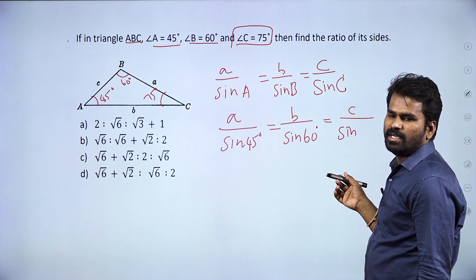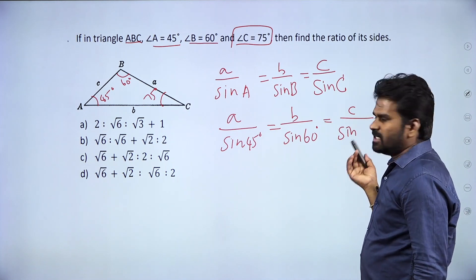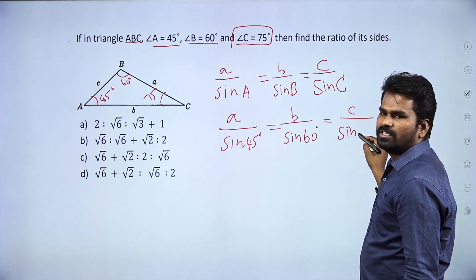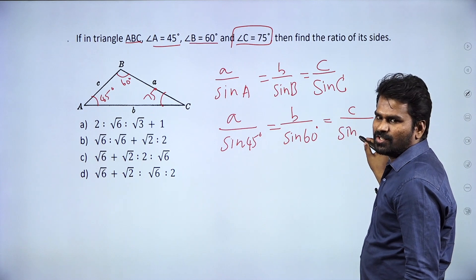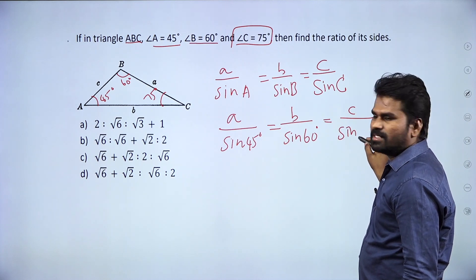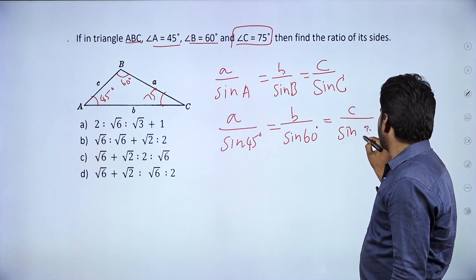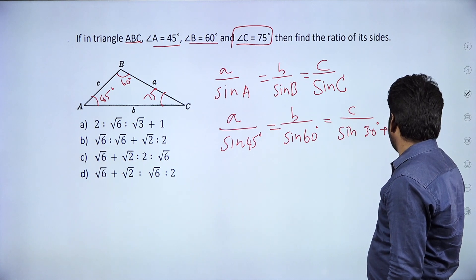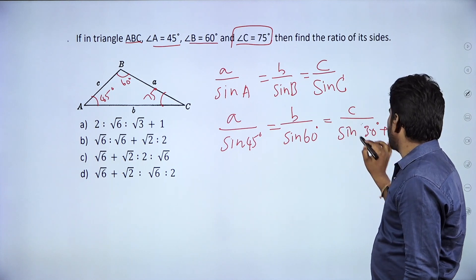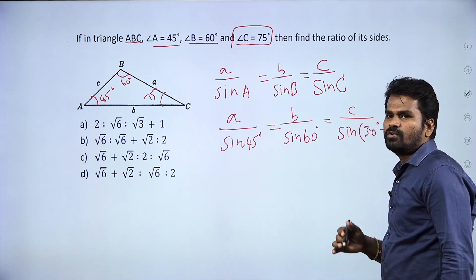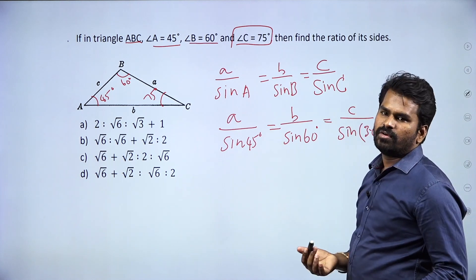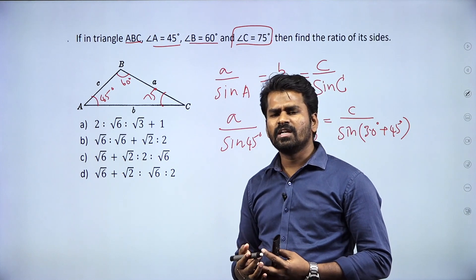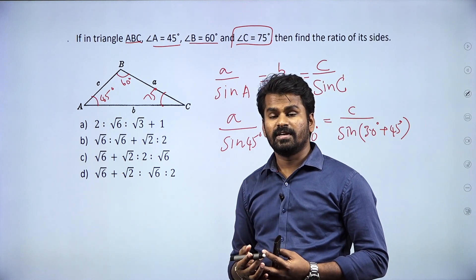We don't immediately know the value of sin 75 degrees. We can express 75 degrees as 30 plus 45 degrees, and use the addition formula to find sin 75 degree.